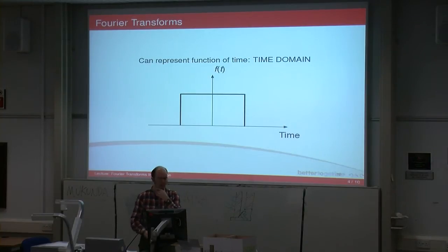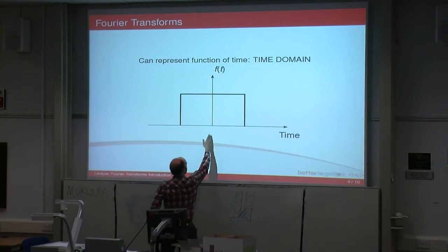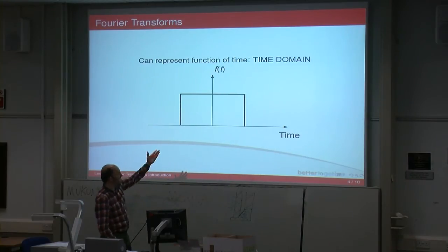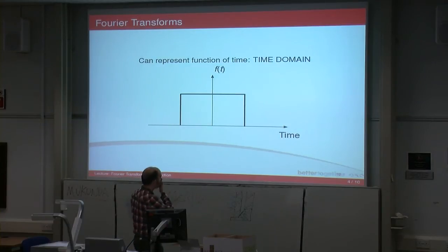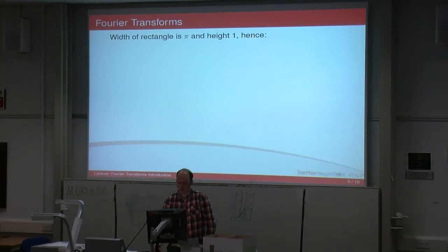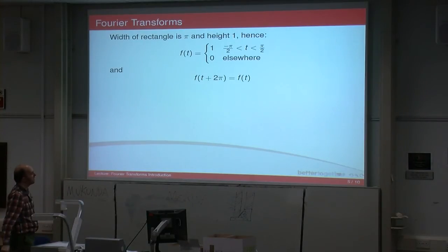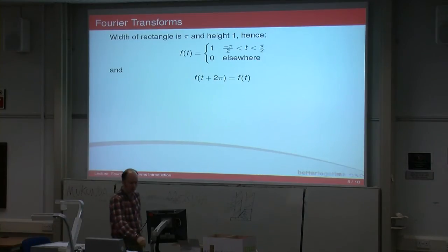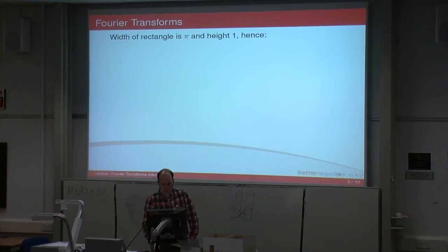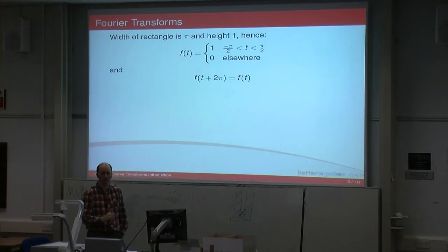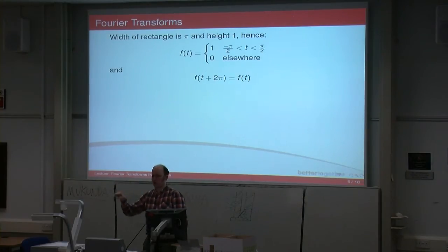Let's take a function in terms of time. Here's a simple rectangular function, centered over time equals zero, of a certain width — this is a function in the time domain. Now we know how to deal with that if we've got a repeating function. Here's the analytical definition: f(t) equals 1 between minus pi/2 and pi/2, and 0 everywhere else. And it's stated as a periodic function that repeats every 2 pi seconds — so we have a square wave function.